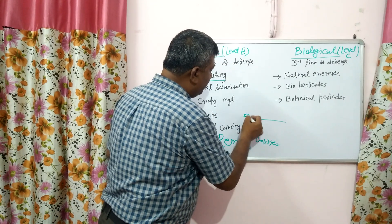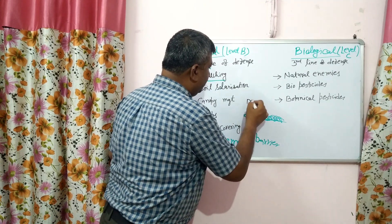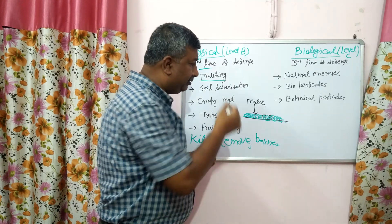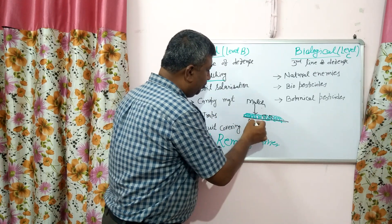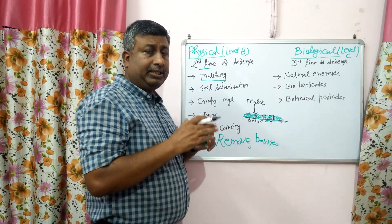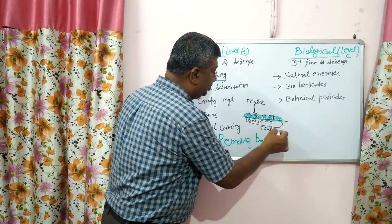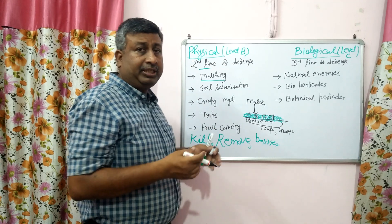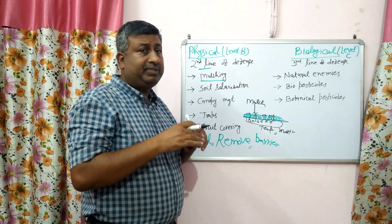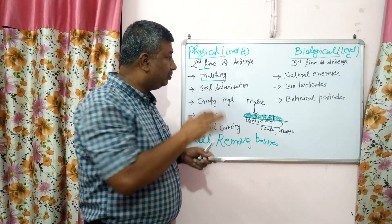Mulch acts as a physical barrier. When mulch is placed on the soil surface, it prevents insects from laying eggs into the soil. Similarly, eggs and pupae already in the soil face a barrier and cannot emerge. Mulch also prevents direct contact between the insect or disease and the soil. Additionally, mulch is very helpful in temperature and moisture regulation — maintaining even moisture — so that disease cannot spread. Excess moisture accelerates disease spread, so balanced conditions keep pest populations low.